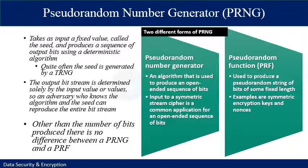In contrast to the true random number generator, pseudo-random number generators take a fixed value called a seed and produce a sequence of outputs using a deterministic algorithm. Quite often the seed is generated by a true random number generator. The output bit stream is determined solely by the input seed, so an adversary who knows the algorithm and the seed can reproduce the entire bit stream. Other than the number of bits produced, there is no difference between a PRNG and a PRF.